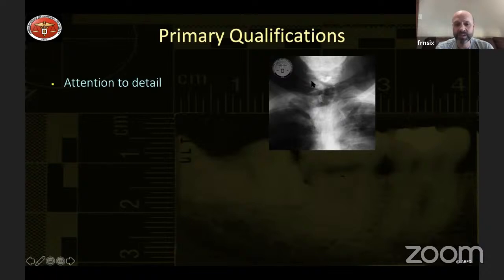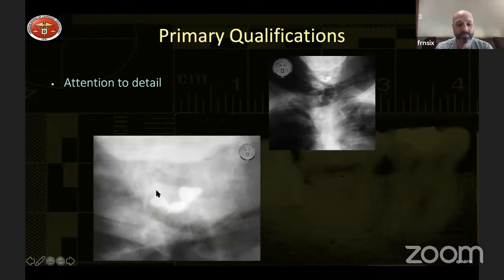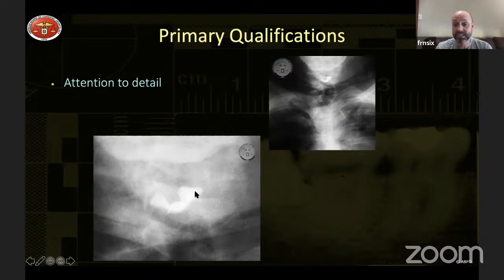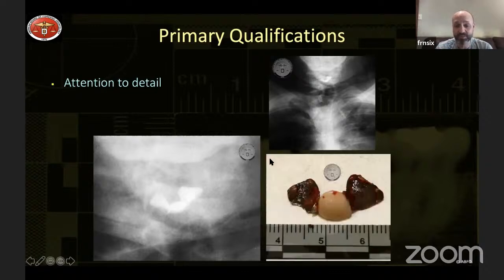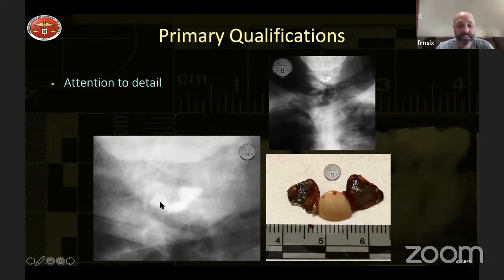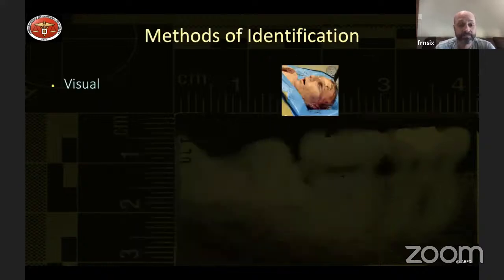Looking at this x-ray, you start to see something that shouldn't be there — around the throat area there's what we call a Maryland bridge. That's the fake tooth portion with two wings glued onto adjacent teeth to replace a tooth. At first glance you might not catch it, but when you look more carefully you can see a vital piece of information that may explain why this person could be deceased.